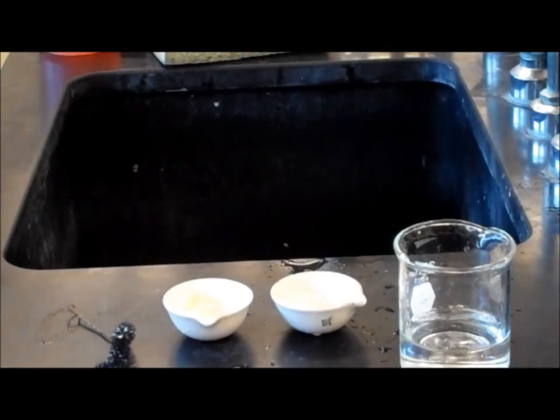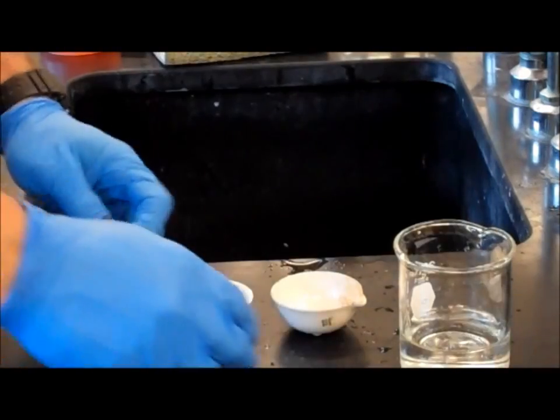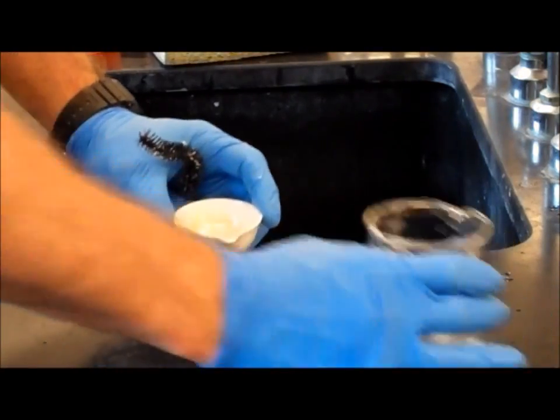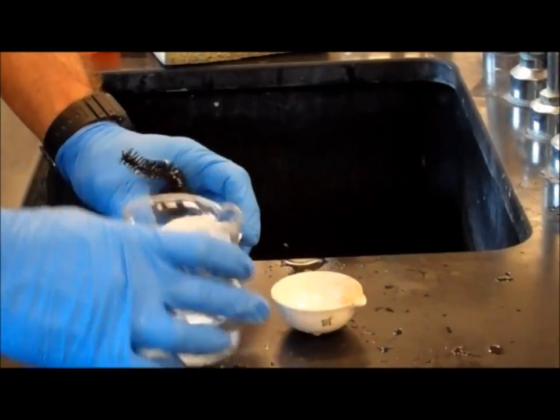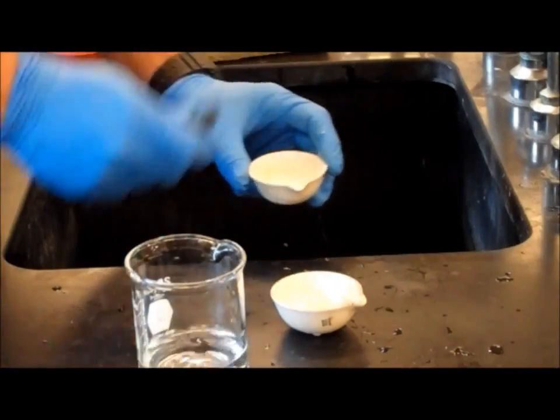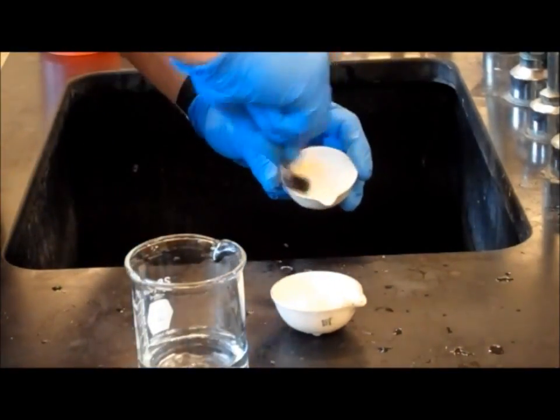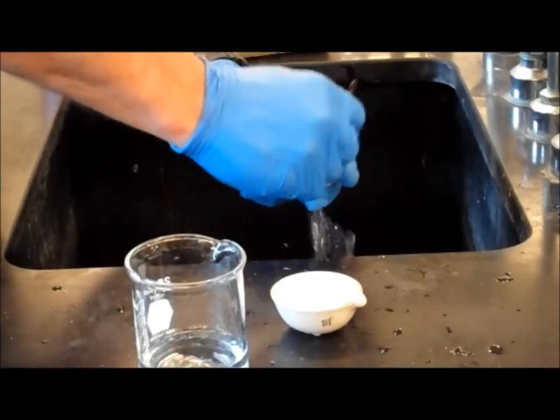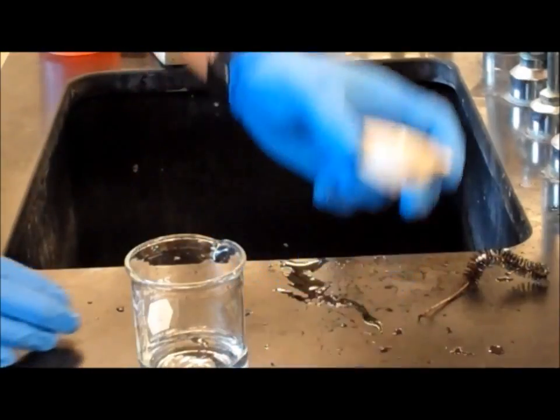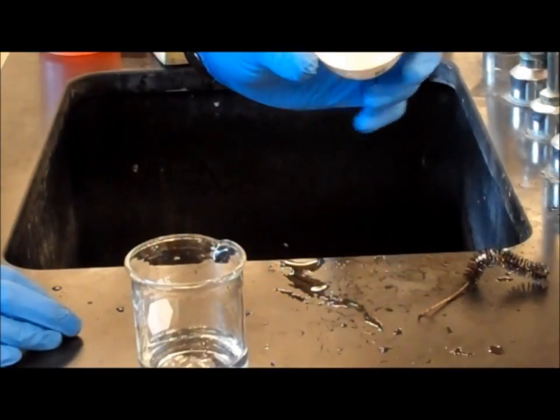In experiment four, you want to first start by cleaning your two crucibles. Repeat the same procedures with your second crucible.